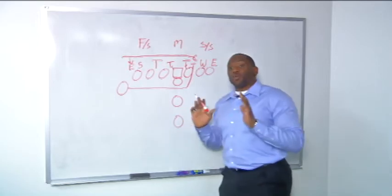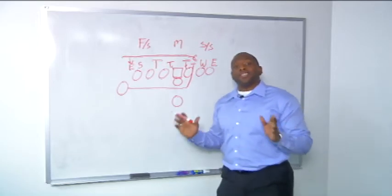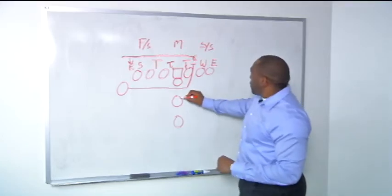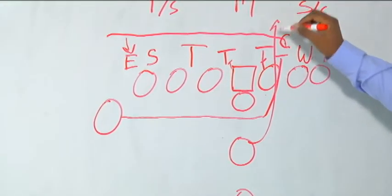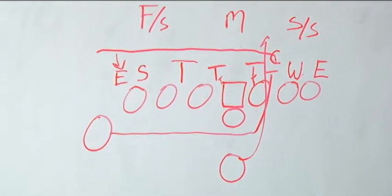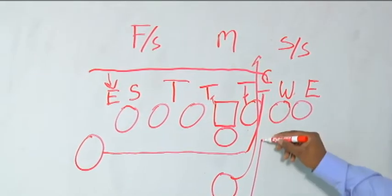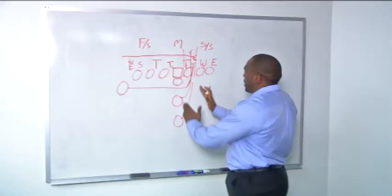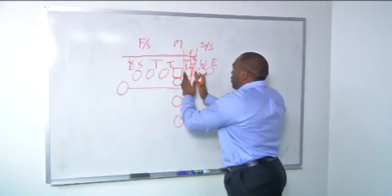You have the offensive line blocking this as a regular dive play because no one is expecting Peyton Manning to keep the ball himself. You also have Mitch Unrine who's going to go after the middle linebacker, and then Knowshon Moreno will get the ball. The Broncos want to get the ball run right between the center and the guard here.